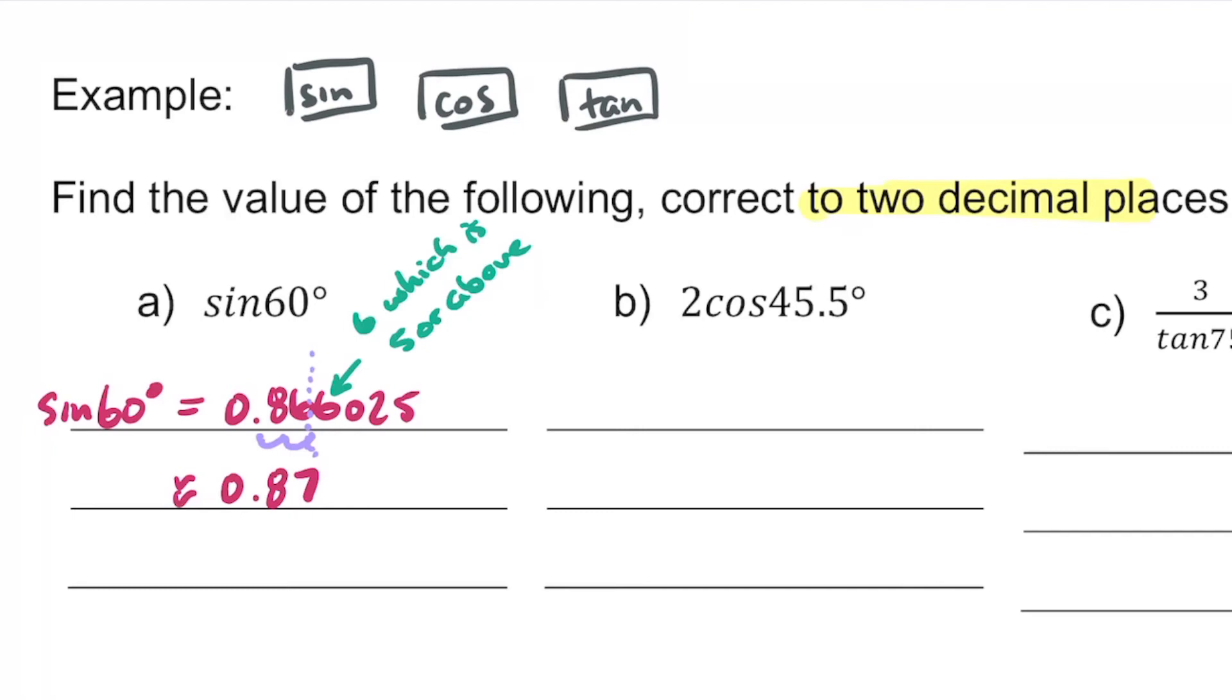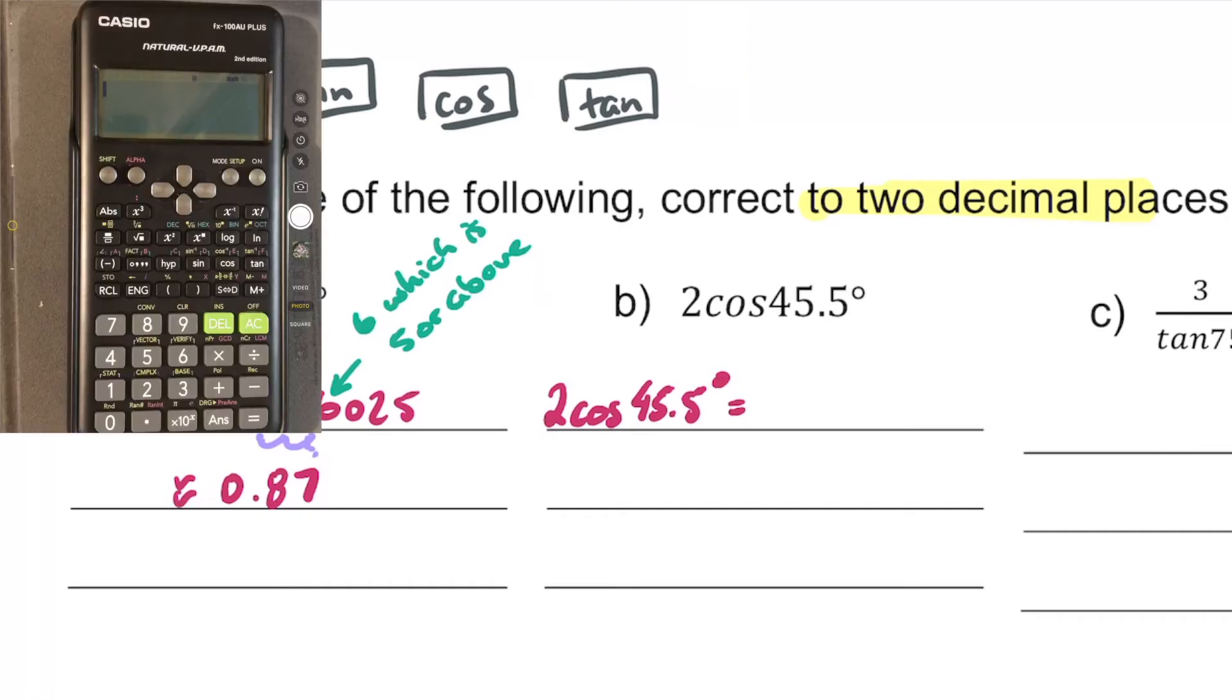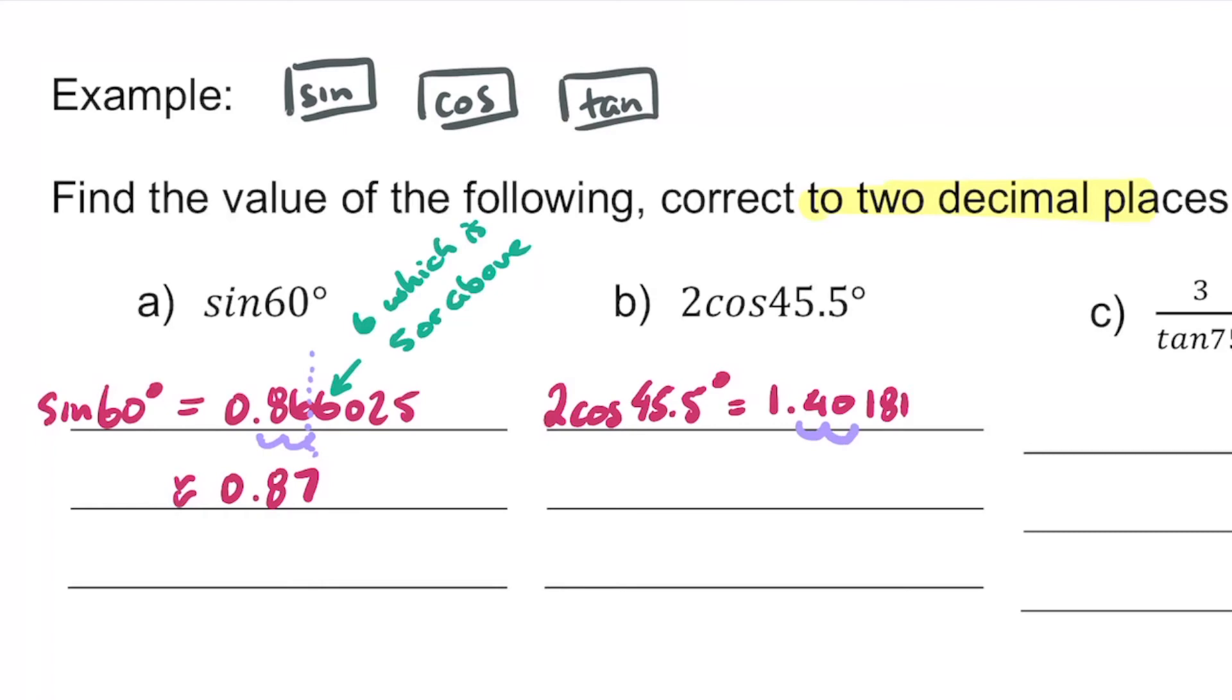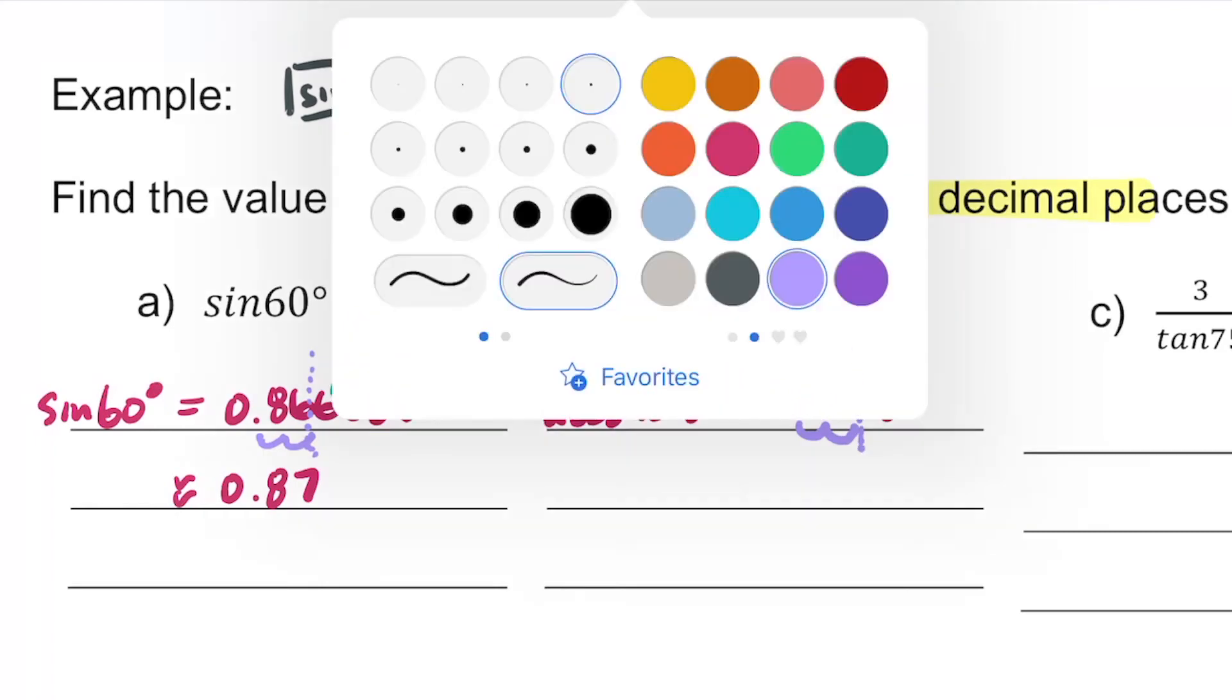Our second example is 2cos45.5 degrees. Again we're going to find our cosine button, then we're going to type in 2cos45.5, hit our equals, and we should get something looking a little bit like this.